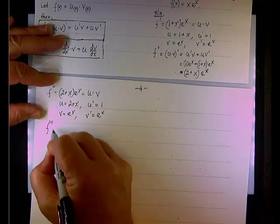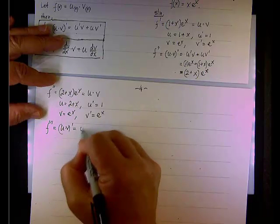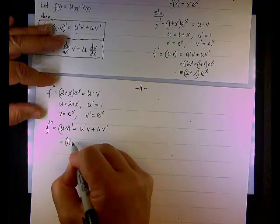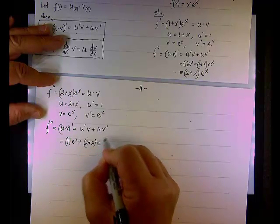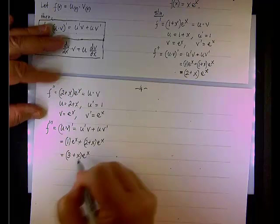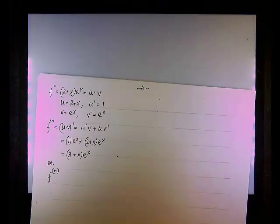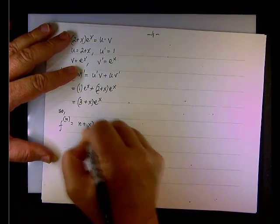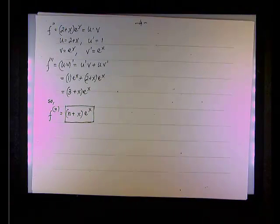And therefore, f triple prime equals the derivative of u times v, and again, it's u prime v plus u v prime, and now replace. u prime is 1, v is e to the x, plus u 2 plus x, v prime is e to the x, and 1 plus 2 is 3, and so, f_n, the nth derivative, will be equals n plus x e to the x. Good here? Happy?